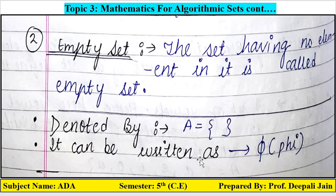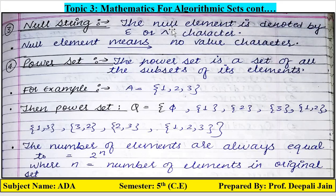Third definition is null string. The null element is denoted by an upsilon or a specific character. Null element means no values or characters — no numbers like 1, 2, 3, 4, and no alphabets like a, b, c. That is called a null string.